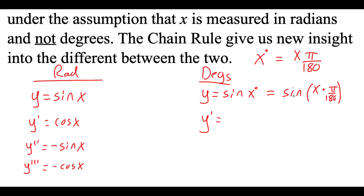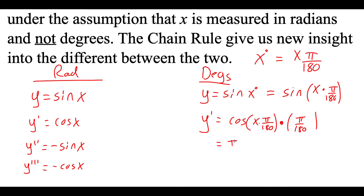If we want to find that derivative, we have to use the chain rule because there's an extra function happening inside the parentheses — x is being multiplied by pi over 180. The chain rule says we take the derivative of the outside, so sine becomes cosine, leave the inside the same, and then multiply by the derivative of the inside. Since pi over 180 is a constant times x, the derivative is just pi over 180. So we rewrite this as pi over 180 times cosine of (x times pi over 180).